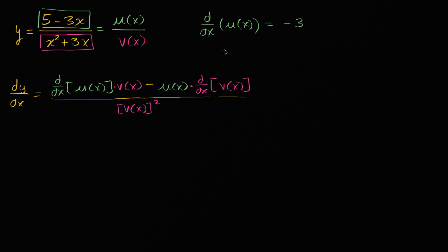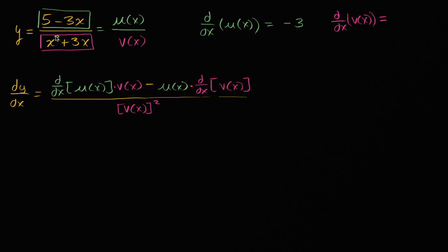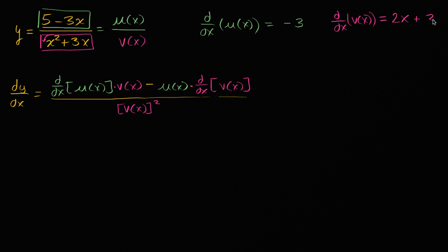Now let's think about the derivative with respect to x of v of x. The derivative of x squared — we bring that exponent out front — is two x to the first power, or just two x. And the derivative of three x is just three. So the derivative of v of x equals two x plus three.